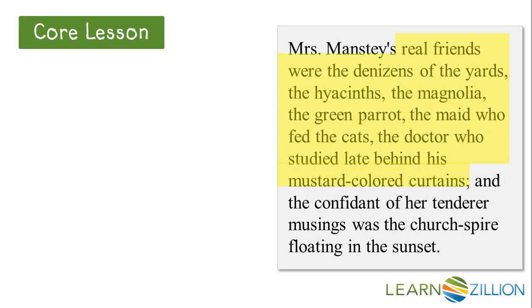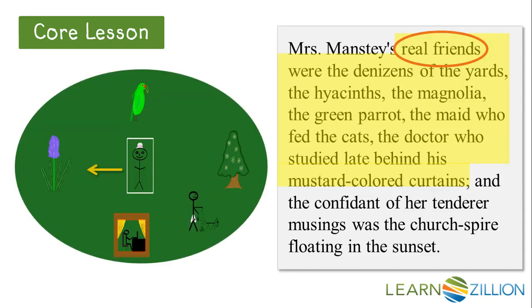In the next section, before Wharton lists all of the items in view, she says that these are Mrs. Manstey's real friends. Typically, people consider themselves friends because they share common interests. The big thing that all of these residents of the yard and Mrs. Manstey have in common is that none of them interact with one another. The plants don't interact with each other, there's no indication the parrot interacts with someone, the doctor is alone studying, and although the maid feeds the cat, there is no indication of any other interaction. This is very much like Mrs. Manstey, because although she does talk to those who visit her, she doesn't seem to care about partaking in any meaningful interactions.